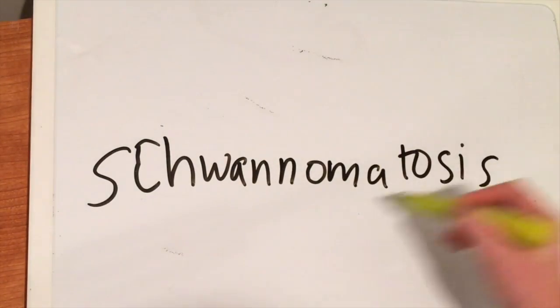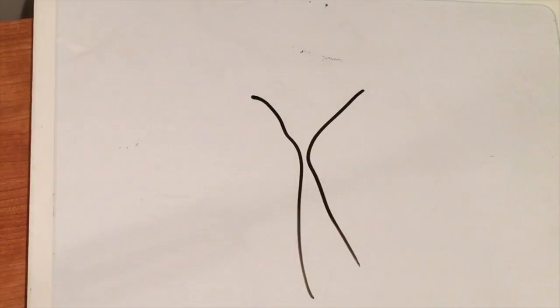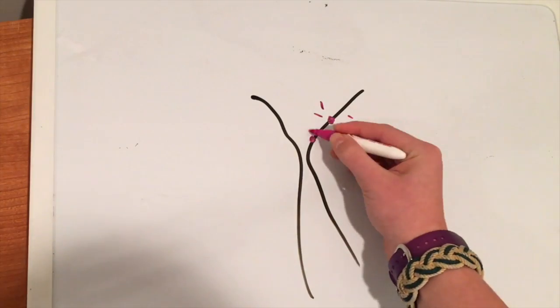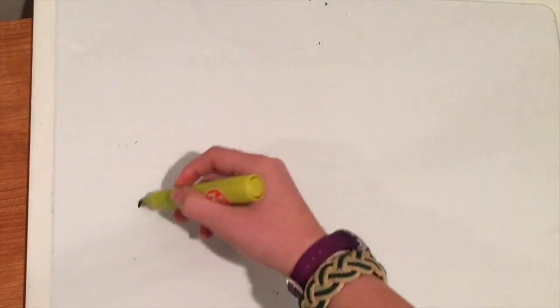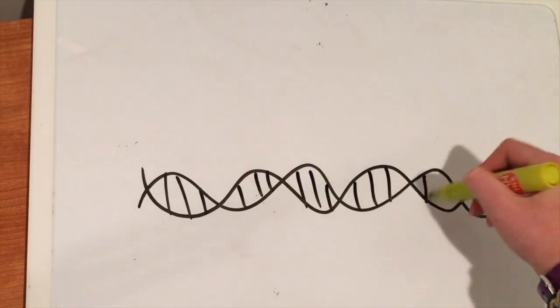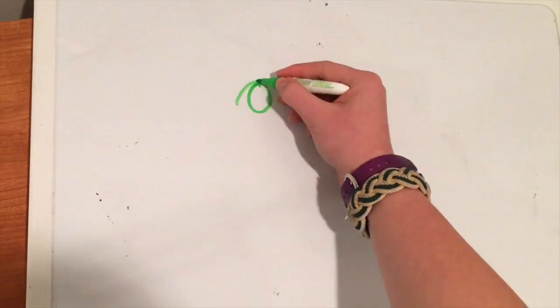Schwannomatosis is very different from those other forms of neurofibromatosis. It affects chromosome 22 near NF2. It is almost always a random mutation, and the way it is passed on has not yet been discovered.